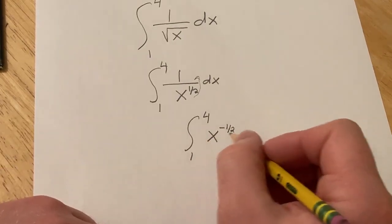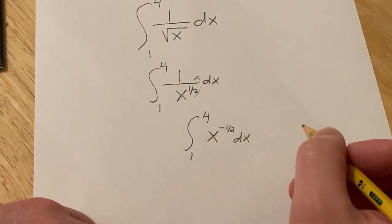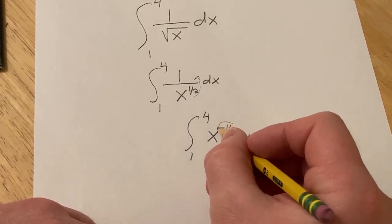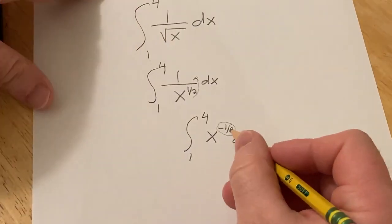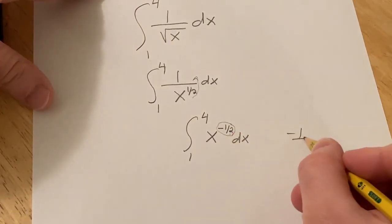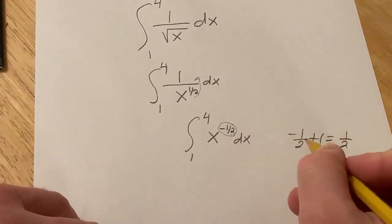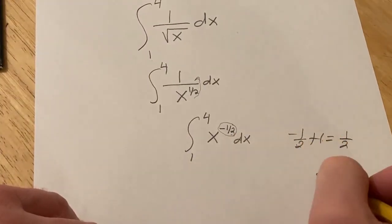Okay, so now we're in a good place. Now we have x to a power so we can integrate. Recall the formula for integration says basically that you add 1 to this and you divide by the result. So negative 1 half plus 1 is really just 1 half, because you take a minus half from a whole so you get a half.